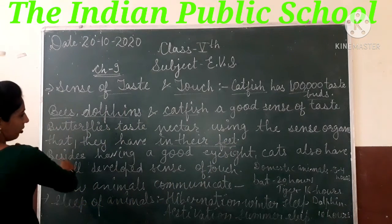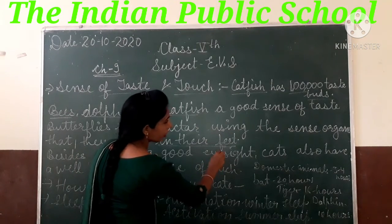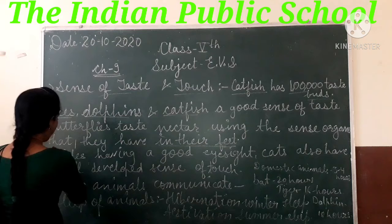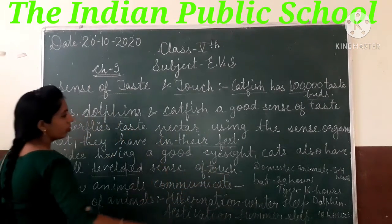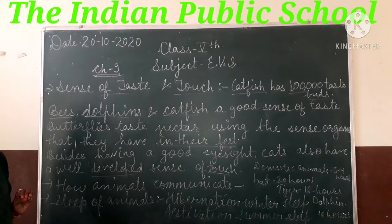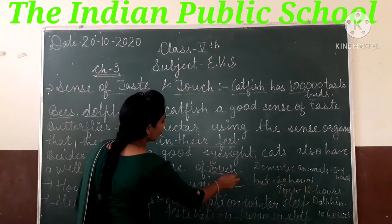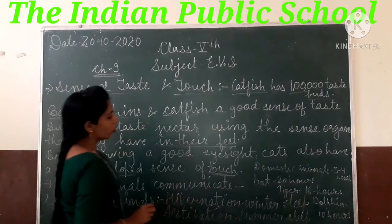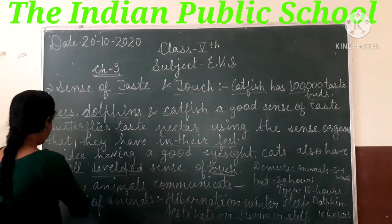Besides having a good eyesight, cats also have a well-developed sense of touch. Cat में vision की sense organ बहुत अच्छी होती है, और इसके साथ साथ touch की sense भी बहुत ज़्यादा अच्छी होती है। जैसे ही हम cat को थोड़ा सा touch करें, उसको उसी time पता चल जाता है।